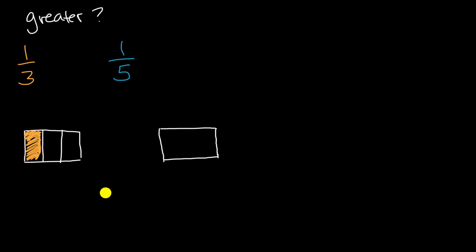Now what about one-fifth? Well, then I would try to divide this into five equal sections. So one, two, three, four, and five equal sections. And so one-fifth would be just one of these fifths. So it would be that right over there.